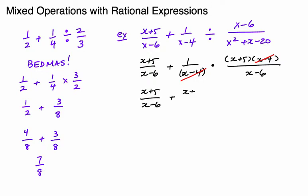That allows us to cancel out some things and gives me (x + 5)/(x − 6) and another (x + 5)/(x − 6). So I have a common denominator — luckily it's basically set for us — the numerators add together and I get 2x + 10.